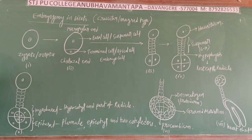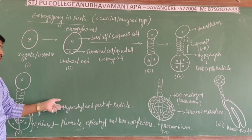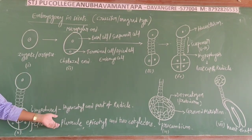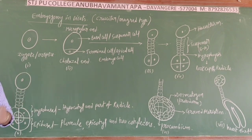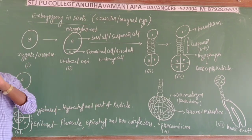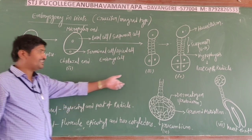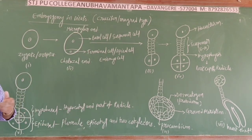The hypobasal cells give rise to the hypocotyl and part of the radicle. The epibasal cells give rise to the plumule, epicotyl, and two cotyledons. As a result of periclinal divisions, three zones are formed in the embryo.